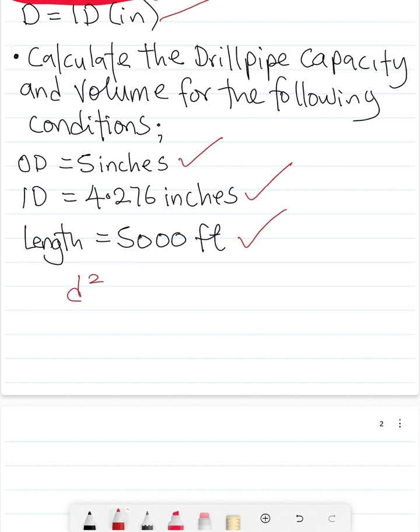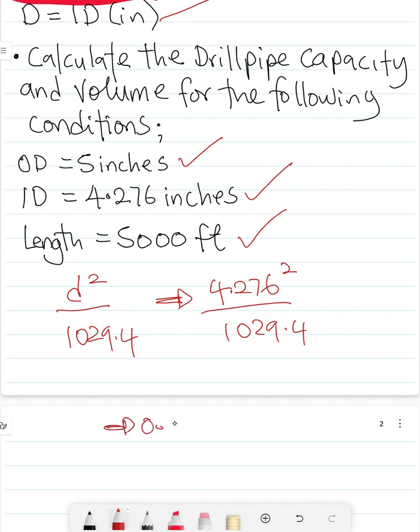So quickly, d squared all over 1029.4 that quickly translates to 4.276 squared all over 1029.4. If you do the math quickly on that you have about 0.017762 and that's going to be in barrels per feet.